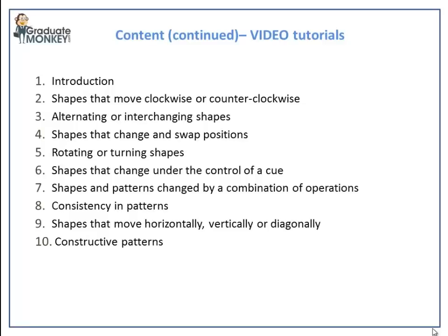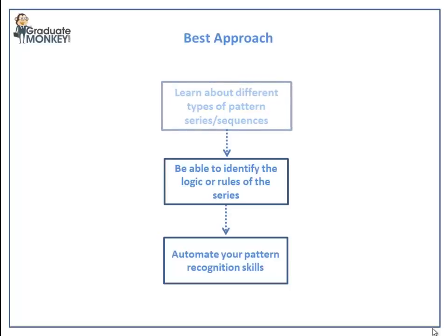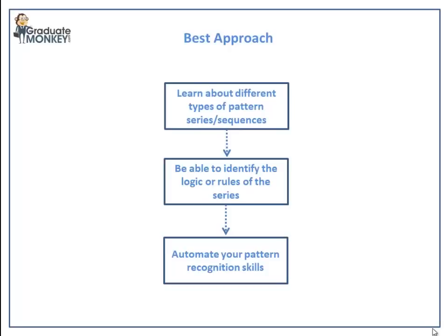Obviously, we will be adding more videos over time. Here is how you can crack the test and get a top logical reasoning test score. First, you will learn about types of sequences or patterns — for example, at least 9 types of sequences where patterns are changed by various operations. Second, you will be able to identify the logic behind those sequences. For example, you will be able to distinguish shapes that move clockwise from those that rotate or swap positions, and then apply these rules to determine the next pattern.